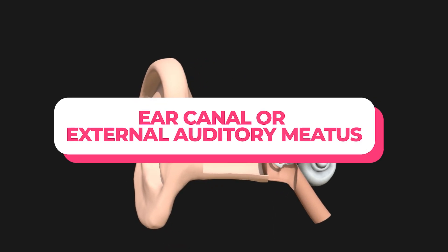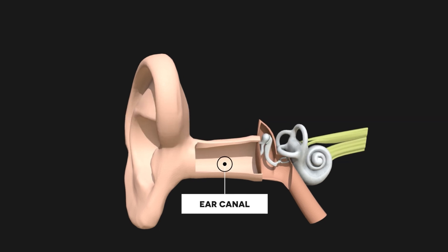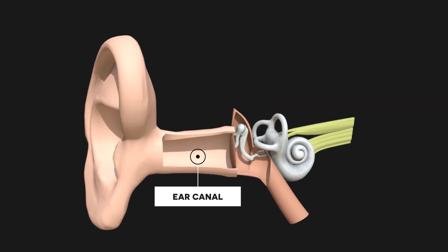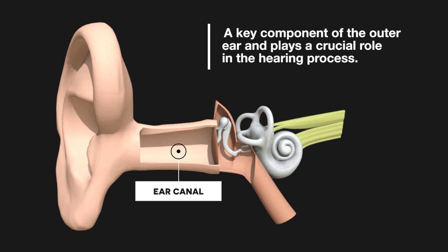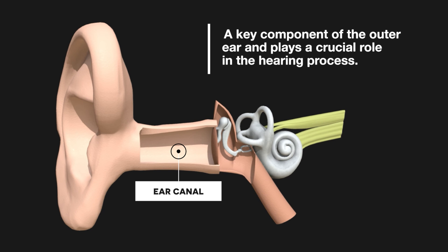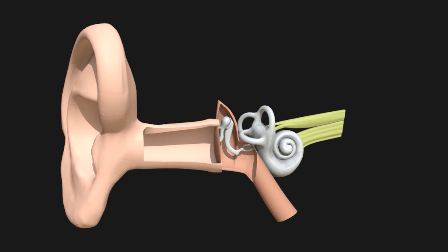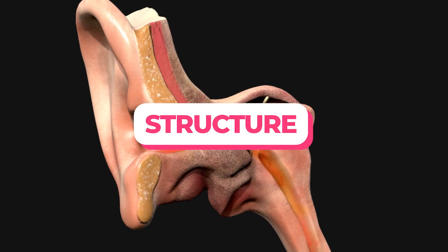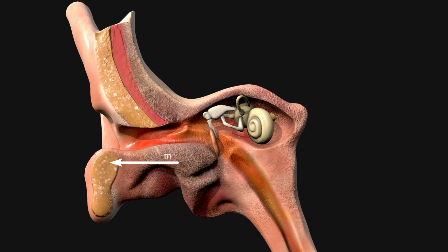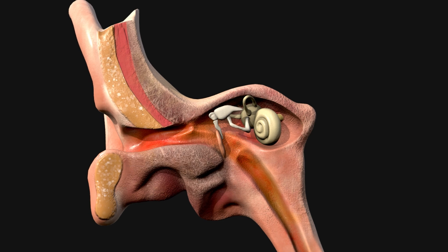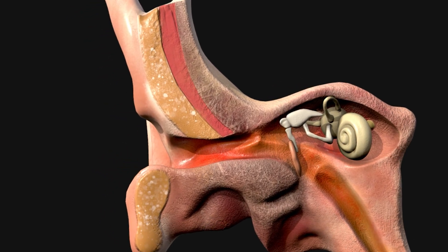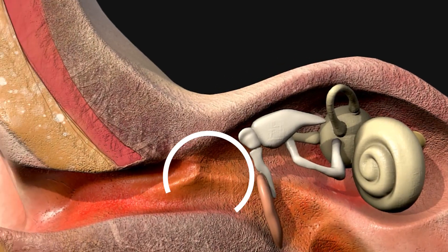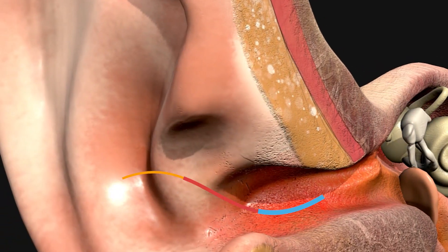The ear canal, also known as the external auditory meatus, is a key component of the outer ear and plays a crucial role in the hearing process. It is a tube-like passage approximately 2.5 cm (1 inch) in length in adults, leading from the outer ear to the eardrum. It is slightly curved in shape, which helps protect the eardrum by preventing direct entry of foreign objects.